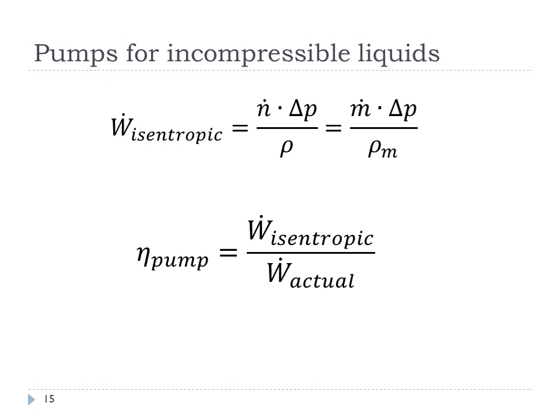For liquid pumps, since the liquid is incompressible, the isentropic work equals the flow rate times the change in pressure across the pump divided by the density. The actual work is the isentropic work divided by the pump efficiency. This is a simple but quite good estimate for pump work.